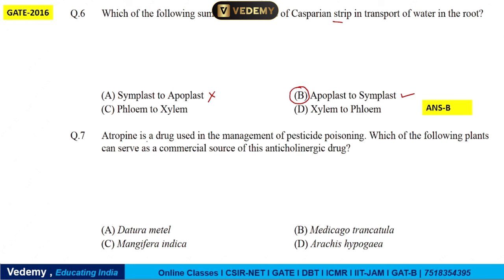Next: atropine is a drug used in the management of pesticide poisoning. Which of the following plants can serve as a commercial source of this anticholinergic drug? This is a direct question. As mentioned earlier, you will need a ready list for this type of previous year question. You will have to focus on memory-based questions of this type.